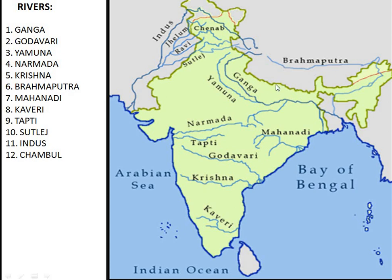On the map, the Brahmaputra is present outside India. Then there is Ravi, Chenab on the upside, Sutlej also on the upside. Ganga is on the east side, Yamuna in the middle, Narmada and Tapti on the west side. Godavari, Krishna and Kaveri are in the south. The rivers present on the map include Ganga, Godavari, Yamuna, Narmada, Krishna, Brahmaputra, Mahanadi, Kaveri, Tapti, Sutlej, Indus, and Chambal.